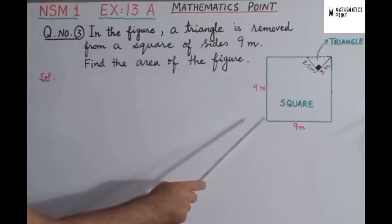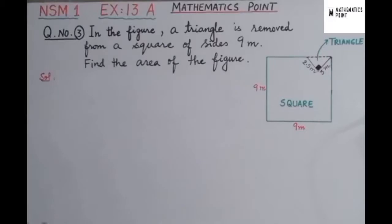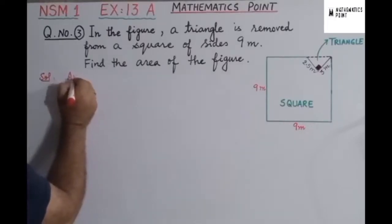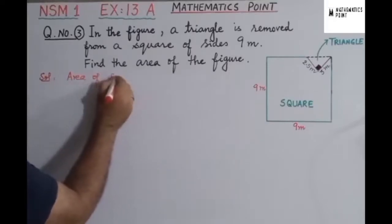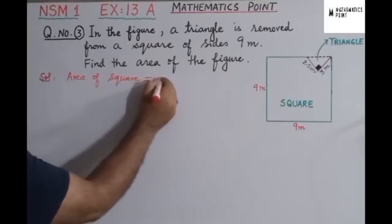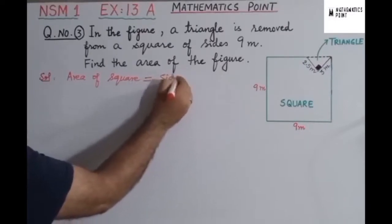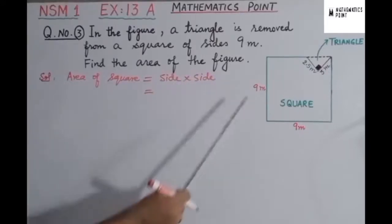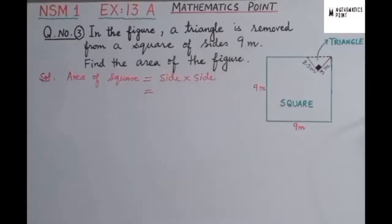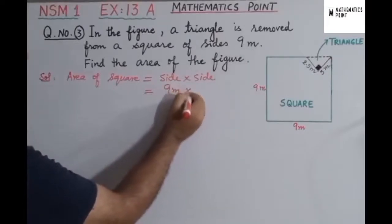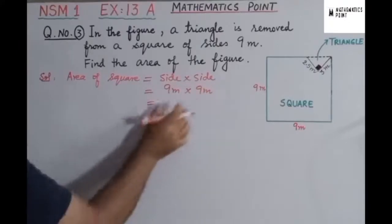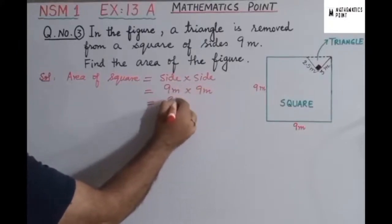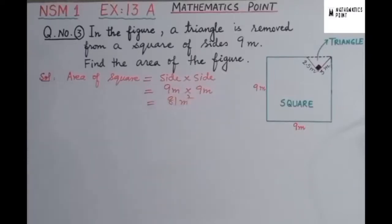Then find out the area of the figure. In this question, first of all we will find the area of the square. The formula for area of square is: Area = side × side. The length of the side is 9 meters, so 9 meters × 9 meters = 81 meters squared. This is the area of the square.